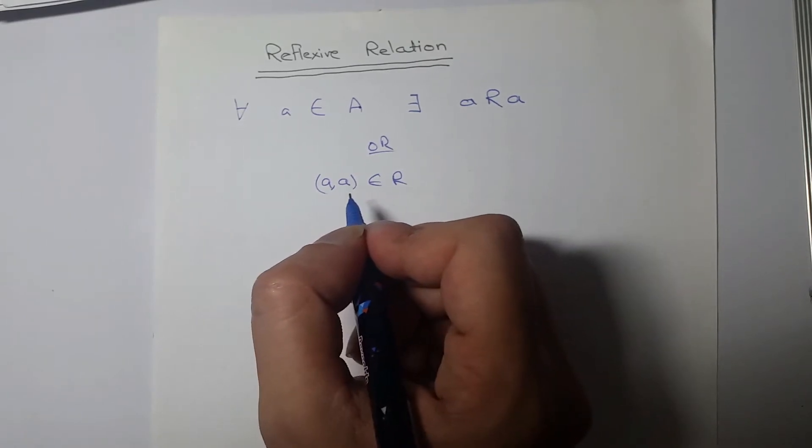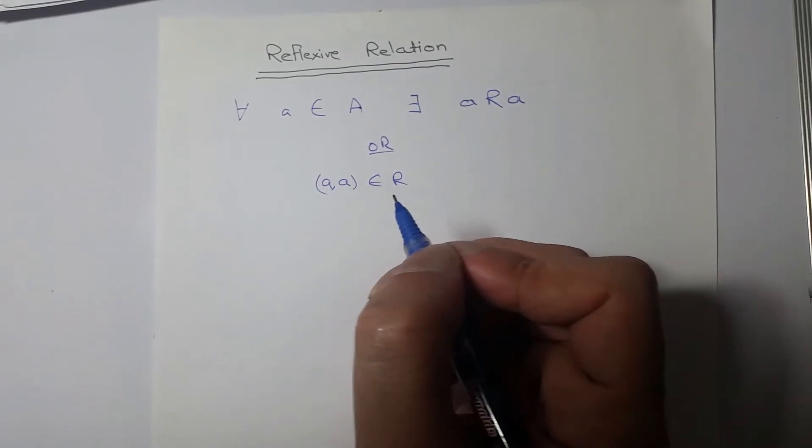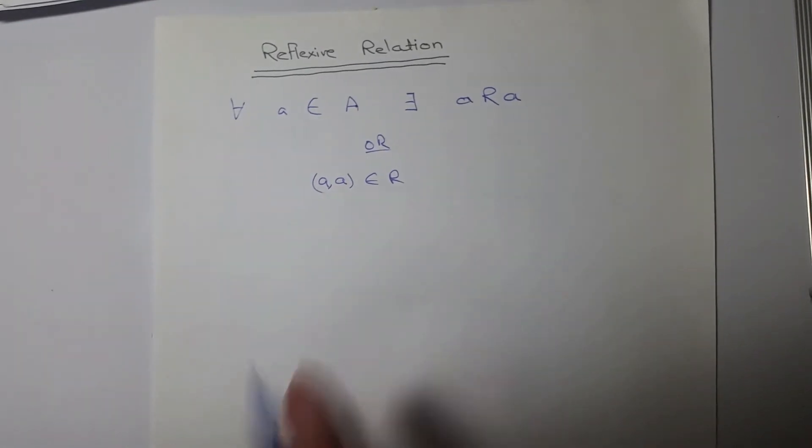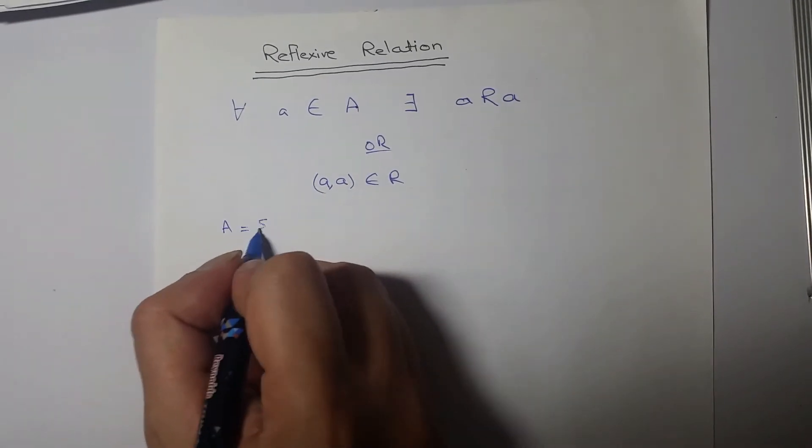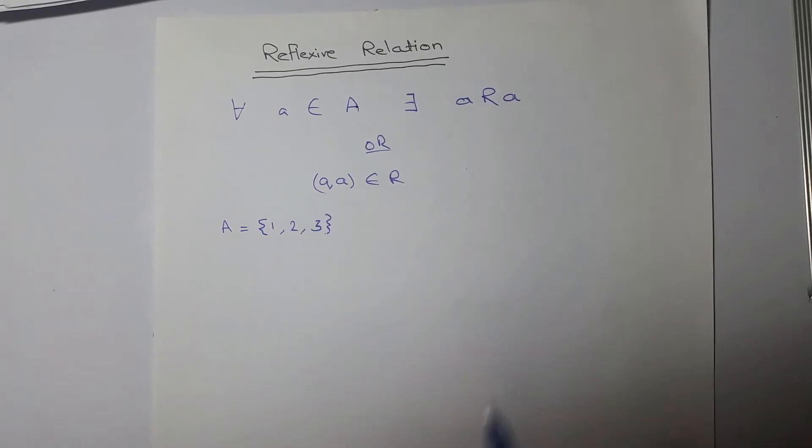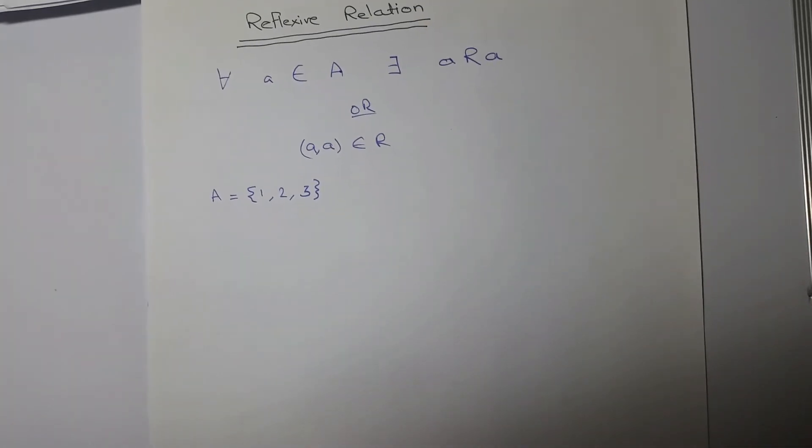Let's see some questions on this. Let's assume that first A is equal to {1, 2, 3}. This is the set we are given and we have to tell which of these relations are reflexive and which one is not.